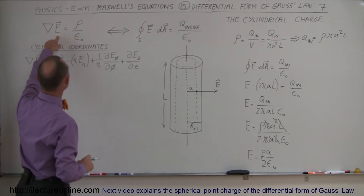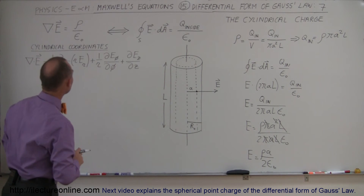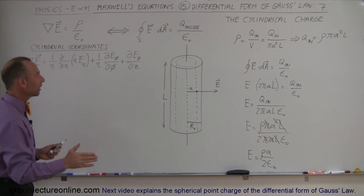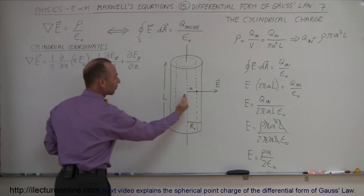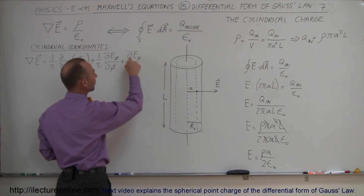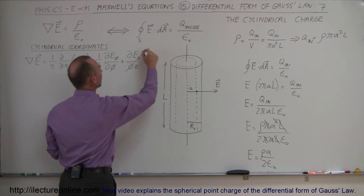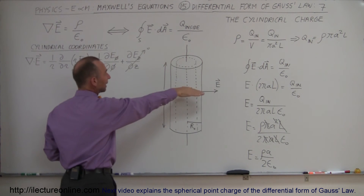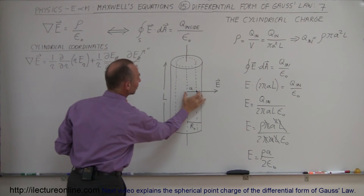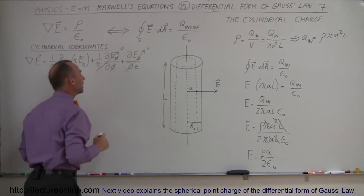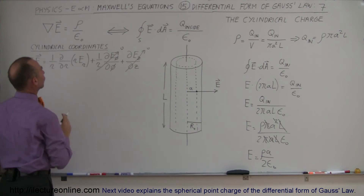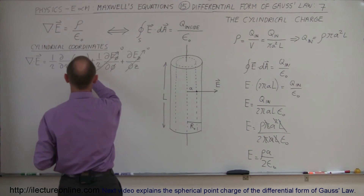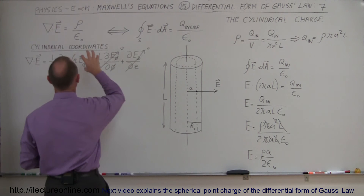We then take that and plug it in to take the divergence of the electric field. In cylindrical coordinates, this is the divergence of the electric field. There is no dependency in the z direction — the electric field strength does not vary with z, so the partial derivative with respect to z is zero. The electric field also does not depend on the angle phi, since the field strength is the same at equal distance A from the center in any direction. So we only need to worry about the radial portion of the divergence equation.